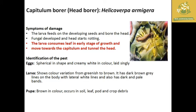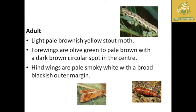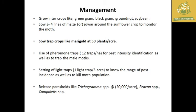For identification: the egg is spherical in shape and creamy white in color, laid singly on the sunflower plant. The larva shows color variation from greenish to brown with dark gray lines on the body and dark pale black bands. The pupa is brown in color and occurs in soil, leaves, and crop debris. The adult is a light paleish brown yellowish stout moth; the forewings are olive green to pale brown and the hindwings are pale smoky white with broad blackish margins.